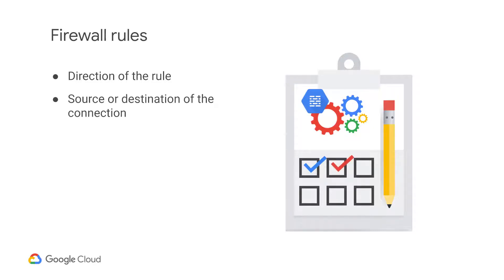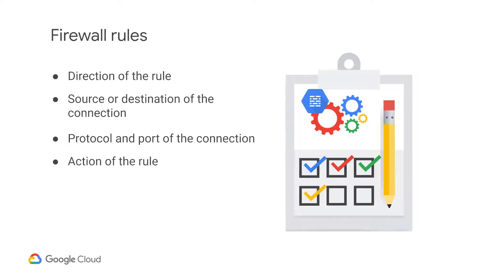For the ingress direction, sources can be specified as part of the rule with IP addresses, source tags, or a source service account. For the egress direction, destinations can be specified as part of the rule with one or more ranges of IP addresses. The protocol and port of the connection, where any rule can be restricted to apply to specific protocols only, or specific combinations of protocols and ports only. The action of the rule, which is to allow or deny packets that match the direction, protocol, port, and source or destination of the rule.